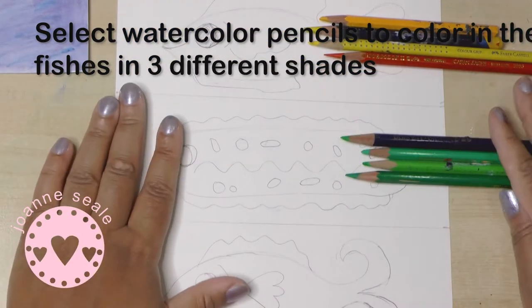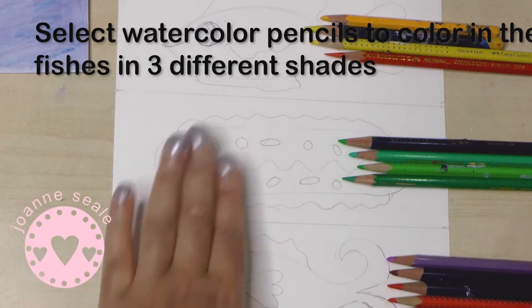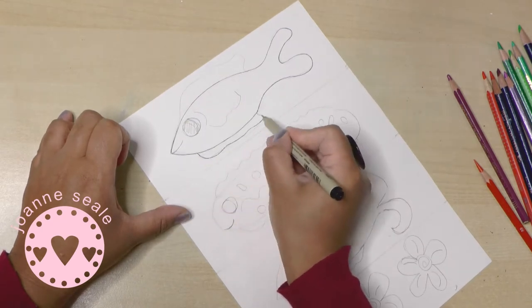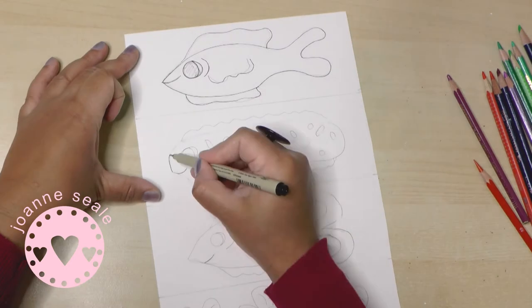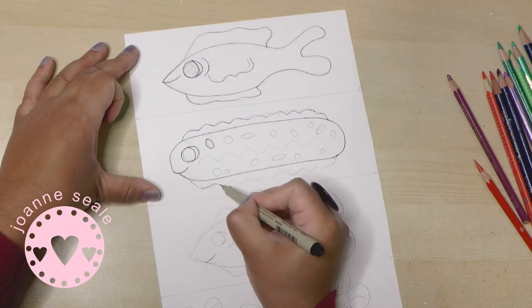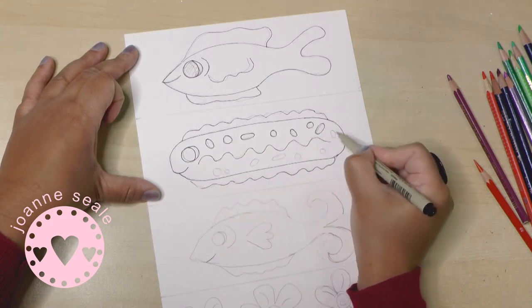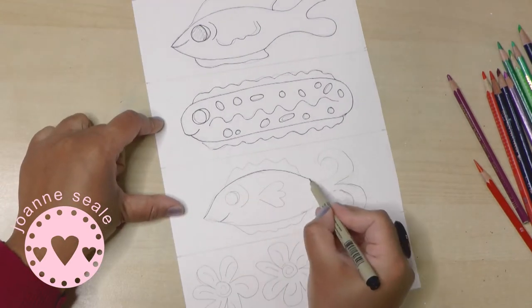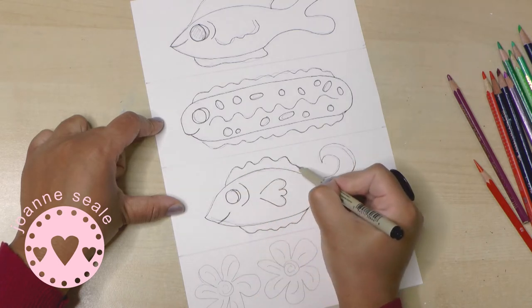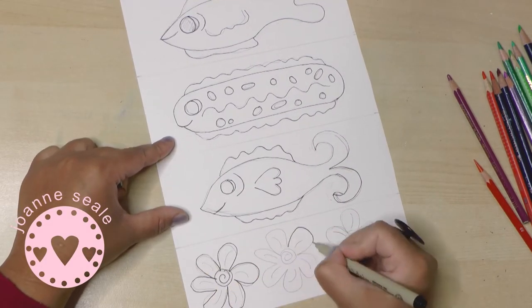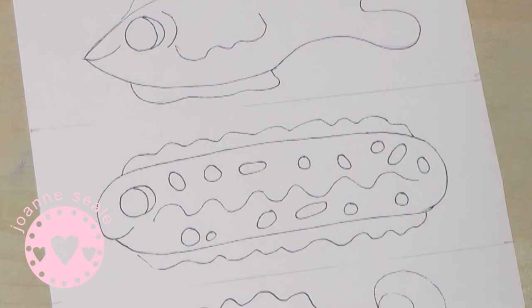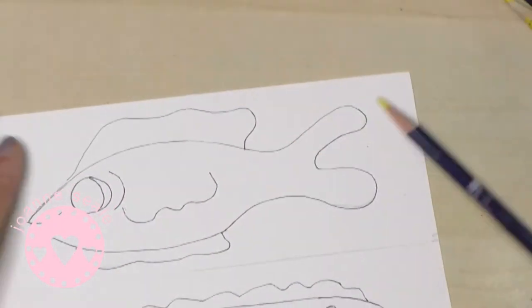Now we're going to color them in and this is the fun exciting part. So you can use different shades on your fishes, you can make them multicolored. I would stick to colors that are similar. I'm just going over the lines, the pencil lines with pen now, just because when you add water to pencil the graphite might wash away a bit. So the pen I'm using is a permanent pen, it's a pigment pen I think it's called a pigment micron.